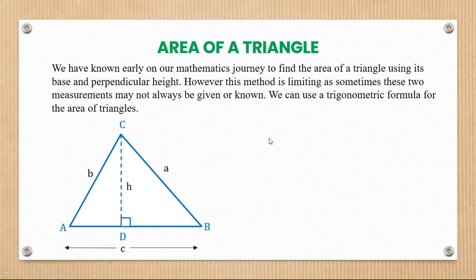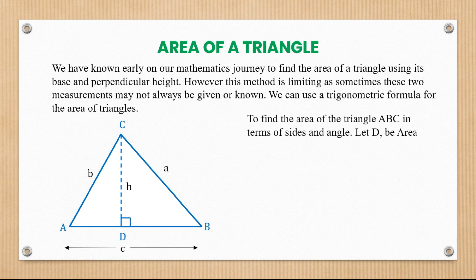There is a formula that says area equals a half times base times height. To find the area of triangle ABC in terms of sides and angle, we let D be the area, so D equals a half times base times height. This formula requires knowing the base and height, but there will be cases where those two values are not given. That's where we need to derive a trigonometric formula to solve those kinds of triangles.